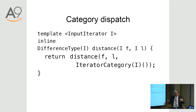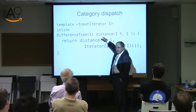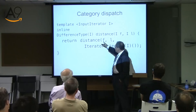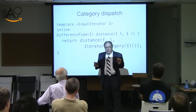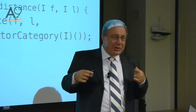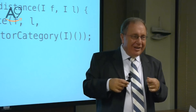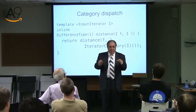So this is the way you do type functions. Now, how do you do category dispatch — how do you assure that every algorithm works as fast as it could with no runtime penalty at all? What you do at the very top level is write a function called distance. It calls distance with the same two arguments and then iterator_category_of_I(), which gives you a type. But functions don't take types — they take objects. So you need to create an object of that type which you pass along, and then the dispatch happens.